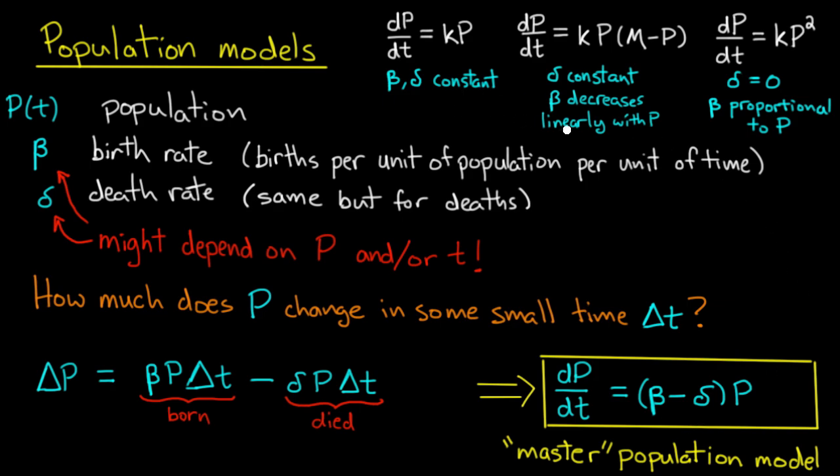Now up here I've written just briefly what beta and delta are in each of these models. In the exponential model, exponential growth, beta and delta are constants.